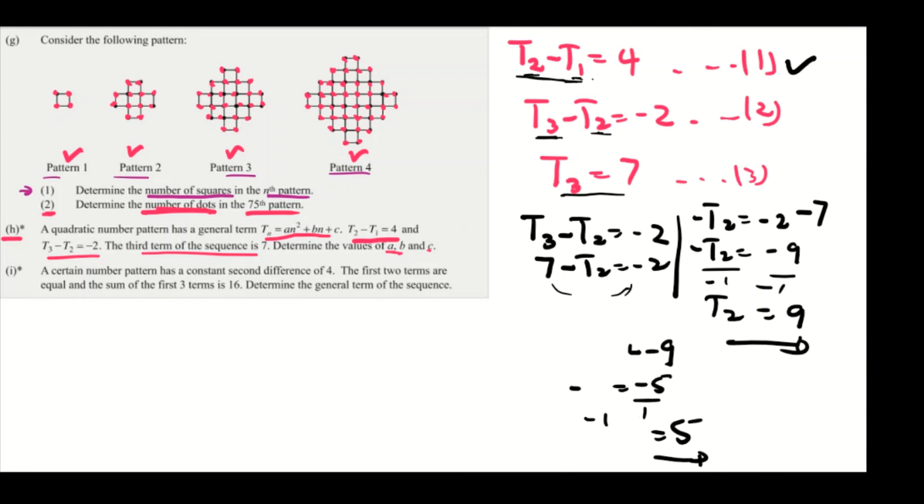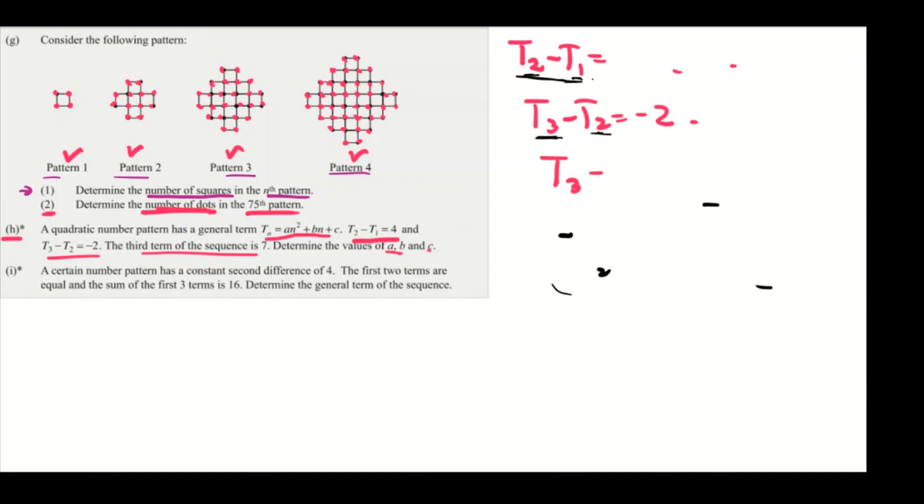So now you know your T₁, T₂, T₃, right? So you can just write them properly. Because we were told that this is a quadratic number pattern, even though we have the first three terms it doesn't matter since we know there's a quadratic number pattern. So T₁ is going to be 5, T₂ is going to be 9, and T₃ is 7. Then now, because we want to identify the value of a, b, and c, we're going to find the first difference of this sequence.